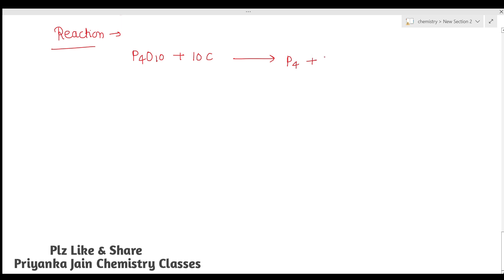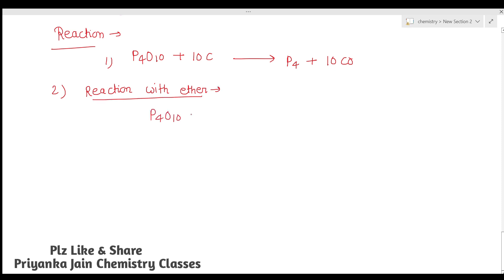Some important reactions of P4O10: when P4O10 is treated with carbon, its reduction occurs giving P4 and CO. The next reaction is with ether: P4O10 treated with 6 Et2O gives 4 PO(OEt)3.